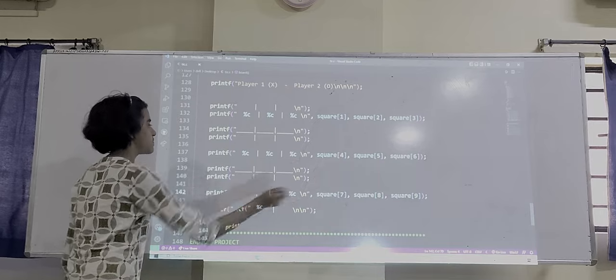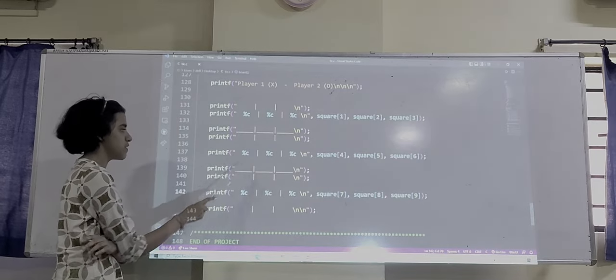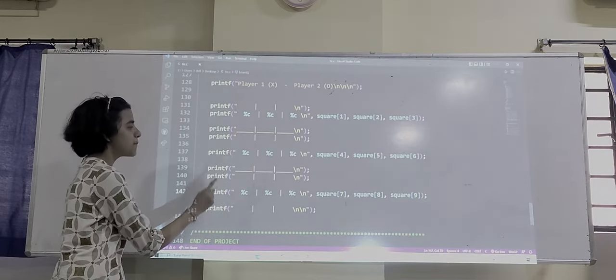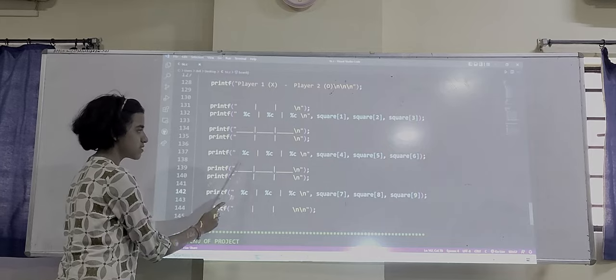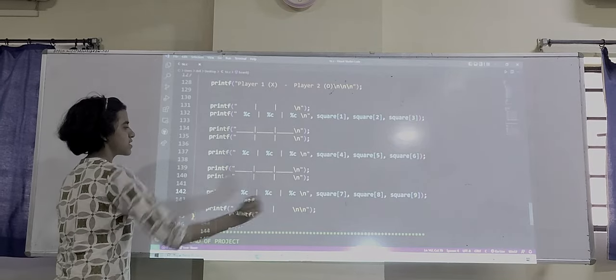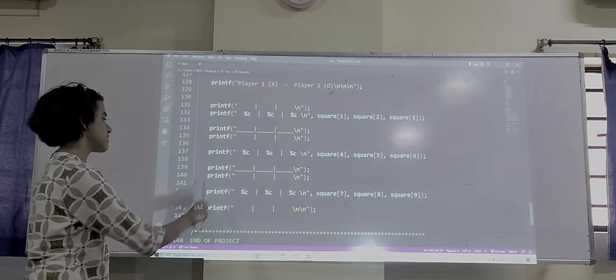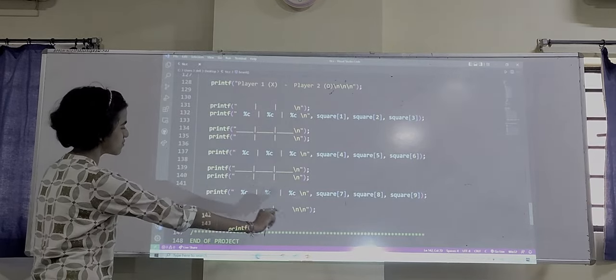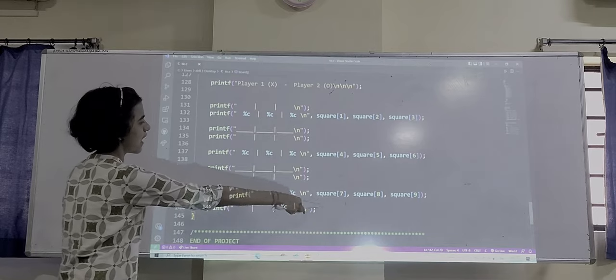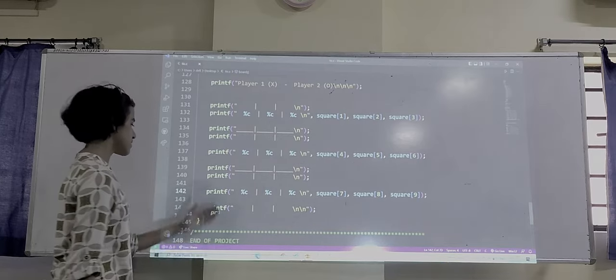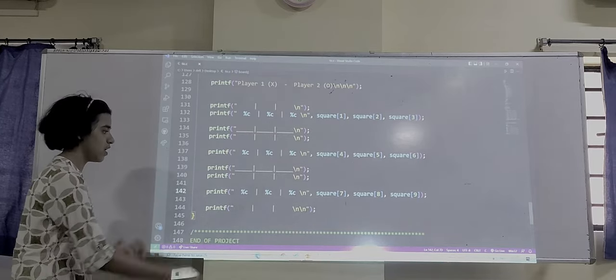We have just drawn some lines to make the board. After that, we have taken the printf function to print the value of square indexing 4, square 5 and square 6. Here we have printed the value of 4, 5, 6. After that, we have taken the board. We have drawn the board. After that, square 7, 8 and 9. This is how the board is formed.